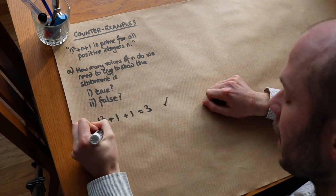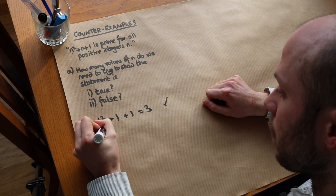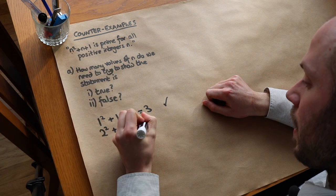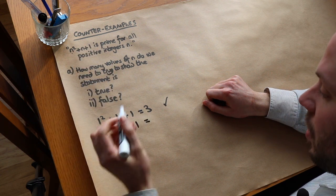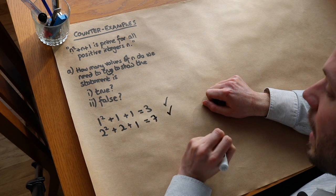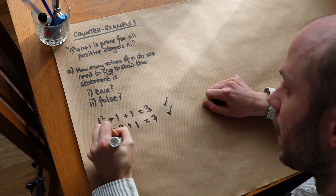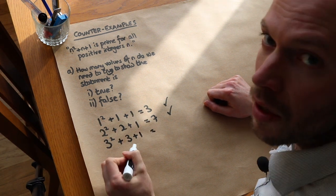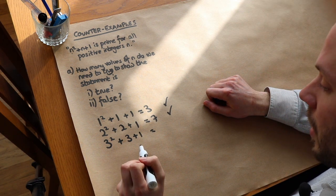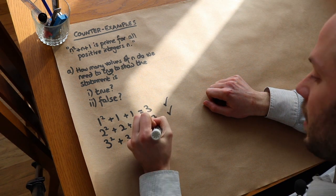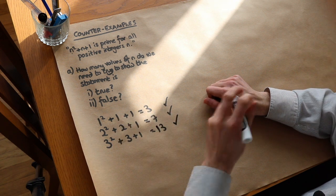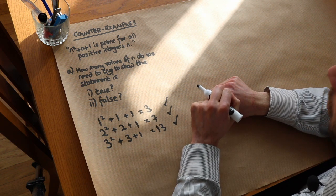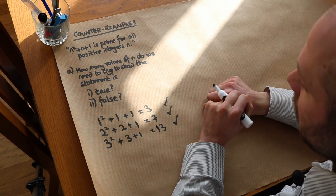We might then try n equals 2: 2 squared plus 2 plus 1 gives 4 plus 2 plus 1, which is 7 — prime again. Then we try n equals 3: 3 squared plus 3 plus 1 is 9 plus 3 plus 1, which gives 13 — also prime. At this point we might conclude that we've tried three examples and they're all prime, so we have enough evidence to say the statement is true.